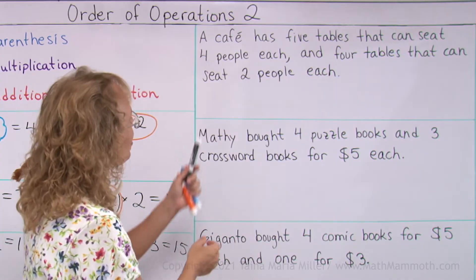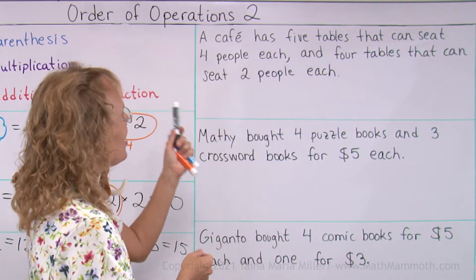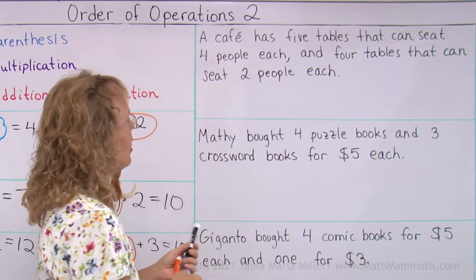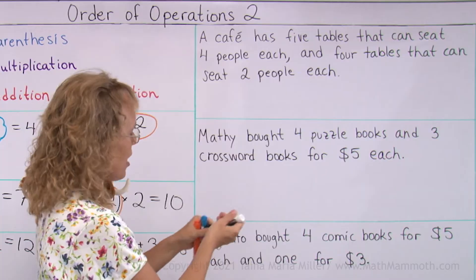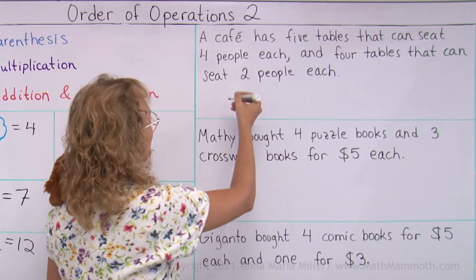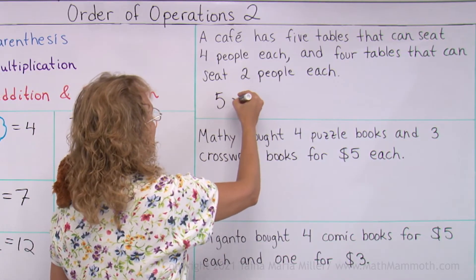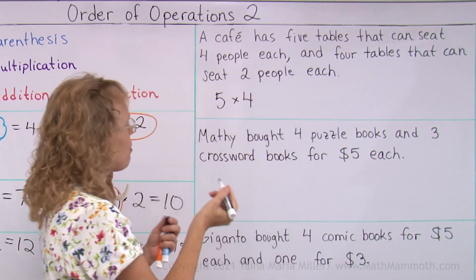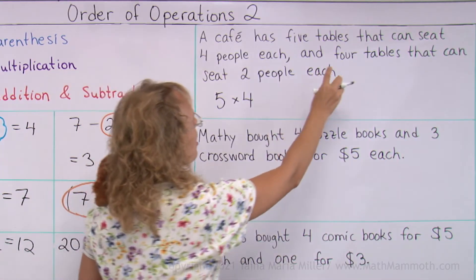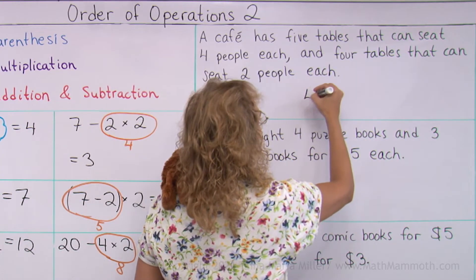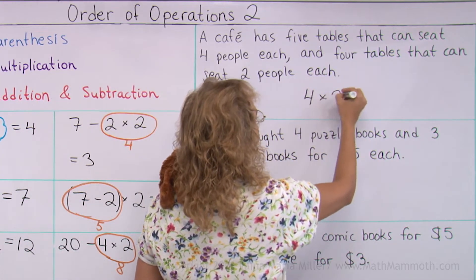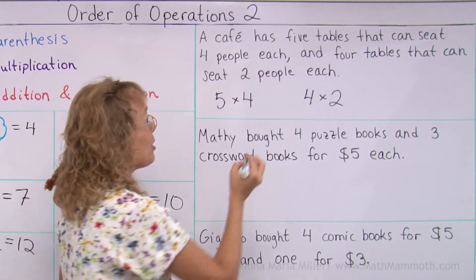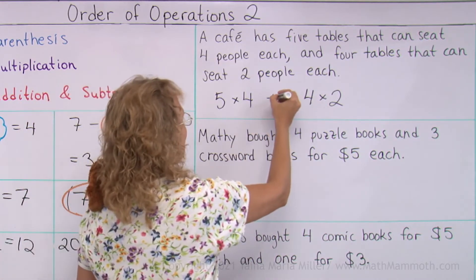Notice the word 'each' — we can use multiplication. There are 5 tables that can seat 4 people each, so 5 times 4. There also are 4 tables that can seat 2 people each. And then we will add.